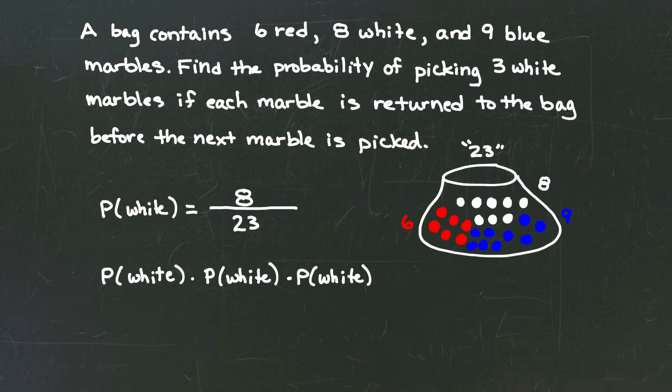And we have this multiplication principle that tells us if we're going to do a sequence of three things in a row, we can multiply those probabilities together to get the entire probability. So the probability of picking three white marbles will be the probability of selecting white times the probability of selecting white times the probability of selecting white.